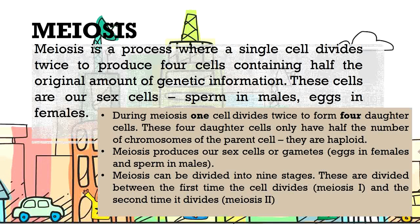Meiosis can be divided into nine stages. These are divided between the first time the cell divides, meiosis 1, and the second time it divides, meiosis 2. What sets meiosis apart from mitosis is that it has both meiosis 1 and meiosis 2. As we move forward in the lesson, we will discuss more about these stages.